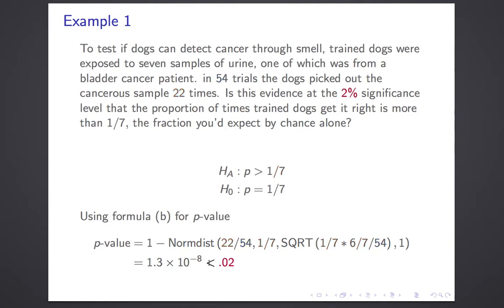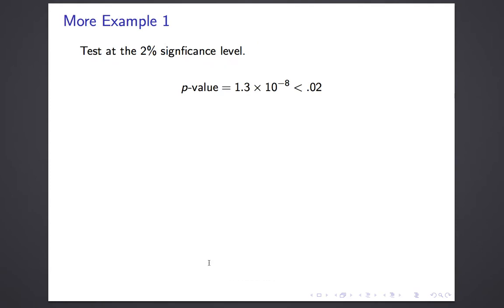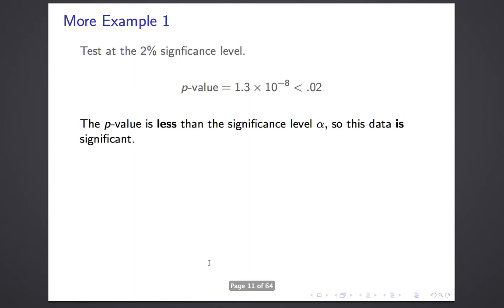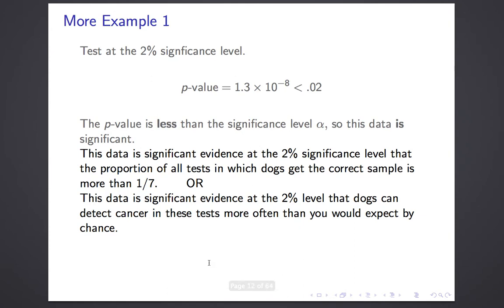It's certainly less than our significance level of 2%. Since it's less than our significance level of 2%, the data is significant, and we report: this data is significant evidence at the 2% significance level that the proportion of all tests in which dogs get the correct sample is more than one-seventh. Or, equally accurate but a little more helpful: this data is significant evidence at the 2% level that dogs can detect cancer in these tests more often than you would expect by chance.